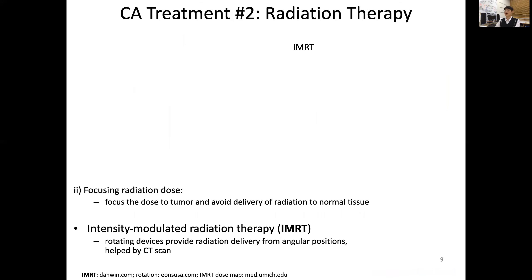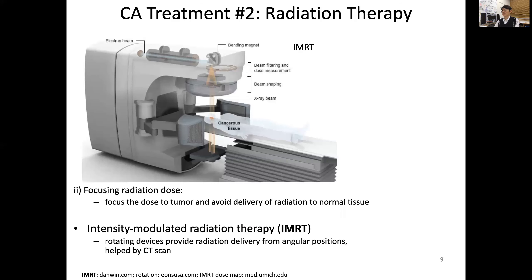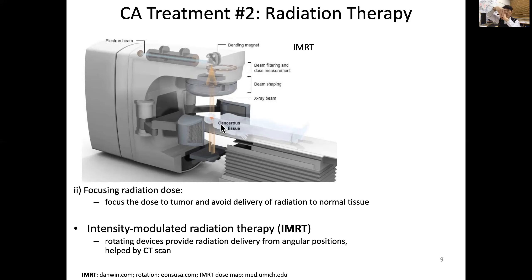There is another way of localizing radiation, called intensity modulated radiation therapy. This instrument produces an electron beam giving high-energy radiation, and uses a bending magnet — not a mirror — to shine through the tissue where the patient is located. We need beam shaping to create this x-ray through the cancerous tissue. The x-ray is so strong that it can almost penetrate the tissue.